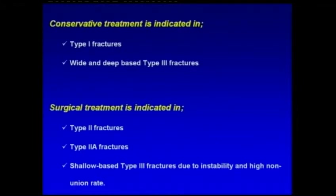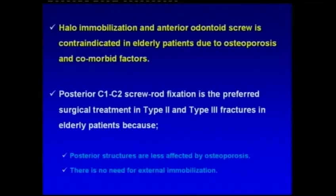Conservative treatment is indicated in type 1 fractures and wide and deep-based type 3 fractures. Surgical treatment is indicated in type 2 fractures, type 2A fractures, and shallow-based type 3 fractures due to instability and high non-union rate. Halo immobilization and anterior odontoid screw fixation are contraindicated in elderly patients due to osteoporosis and comorbidities.